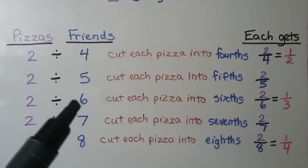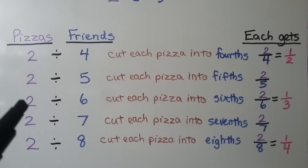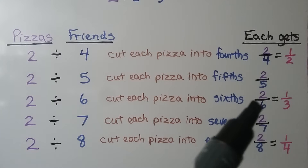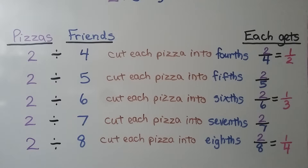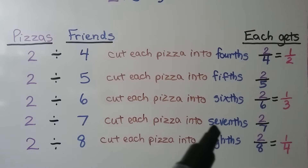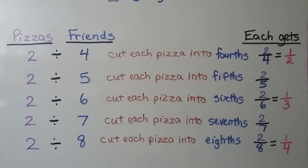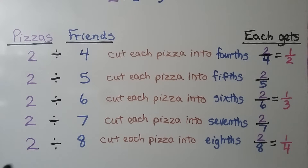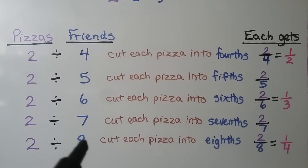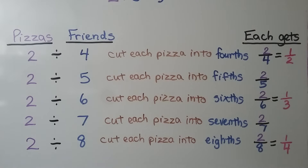If there are 2 pizzas and 6 friends, we cut each pizza into 6ths, and they'll each get 2 sixths, which simplifies to 1 third. If there are 2 pizzas and 7 friends, cut each pizza into 7ths — they each get a 7th from each pizza, so that's 2 sevenths. If there are 2 pizzas and 8 friends, cut each pizza into 8ths, and they'd get an 8th from each pizza — 2 eighths, which simplifies to 1 fourth. Do you see the pattern?